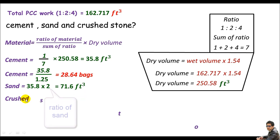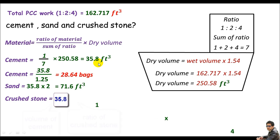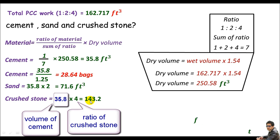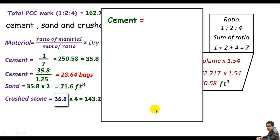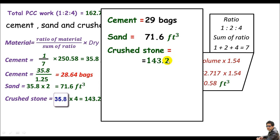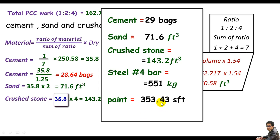Here is our detailed result: cement is 29 bags, sand is 71.6 cubic feet, crushed stone is 143.2 cubic feet — you can convert all these to cubic meters. Steel (number four bar) is 551 kg, and the external painting area is 353.43 square feet. This completes Example 1.